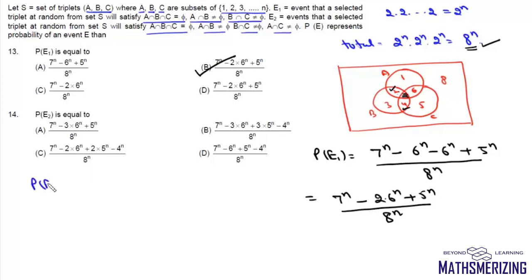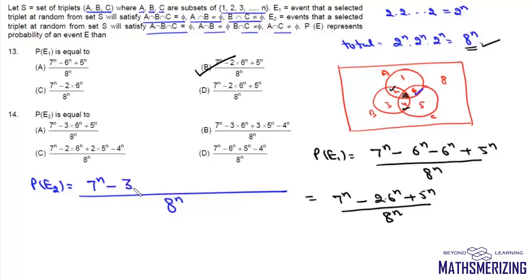Now find the probability of E2. In the E2 situation it is the same except that region 6 must also not be empty. Again total choices are 8^N; region 7 is empty so we have 7^N choices, minus all cases in which at least one of regions 2, 4, or 6 is empty. By inclusion-exclusion: subtract 3C1 × 6^N, add back 3C2 × 5^N, then subtract 4^N for when all three are empty. So the answer is (7^N − 3×6^N + 3×5^N − 4^N) / 8^N, which is again option B.